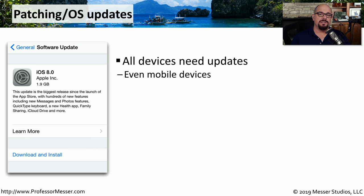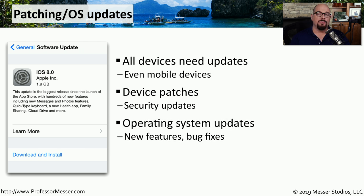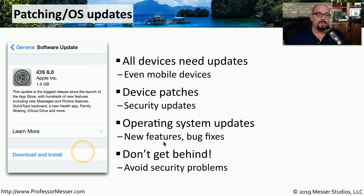Although these mobile operating systems are relatively safe, it's still important to maintain the updates and patches for these operating systems. There are still vulnerabilities that can be found, so security updates are an important thing to stay on top of. You want to be sure that your system is up to date with the latest version of software. Your operating system will also have updates that make it more stable and may provide additional features, and there are features built in that can automatically install these updates when they're available.